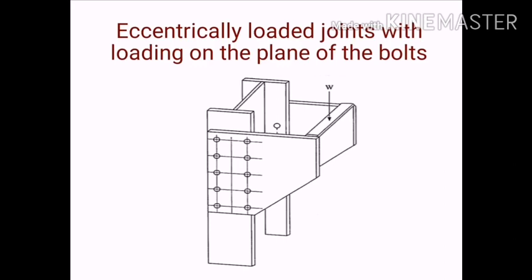Starting with the first case: eccentrically loaded joints with loading in the plane of the bolts. In the figure you can see there are around 10 bolts and the load W is acting in the plane of the bolts. The plane where the load acts and the plane where the bolts are arranged are the same plane. Now let us see how to solve this kind of problem.